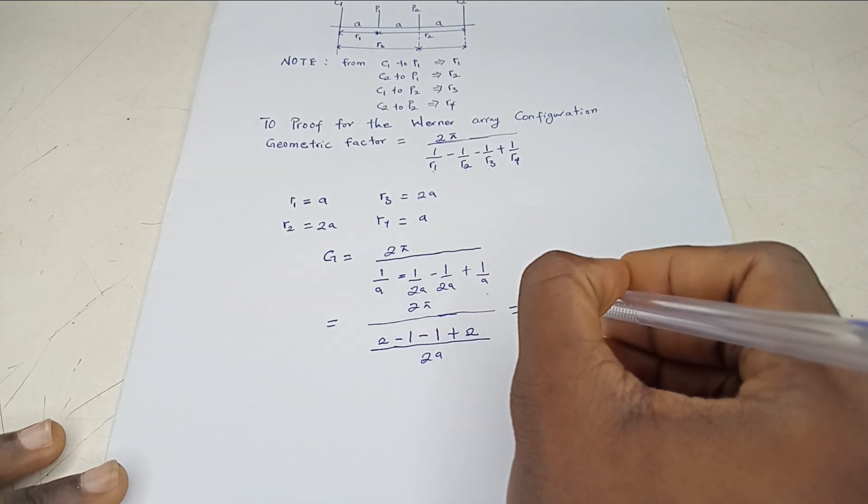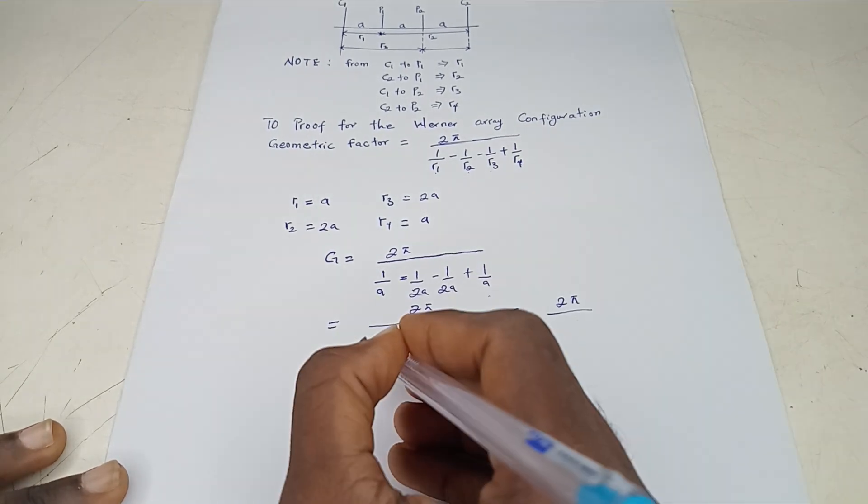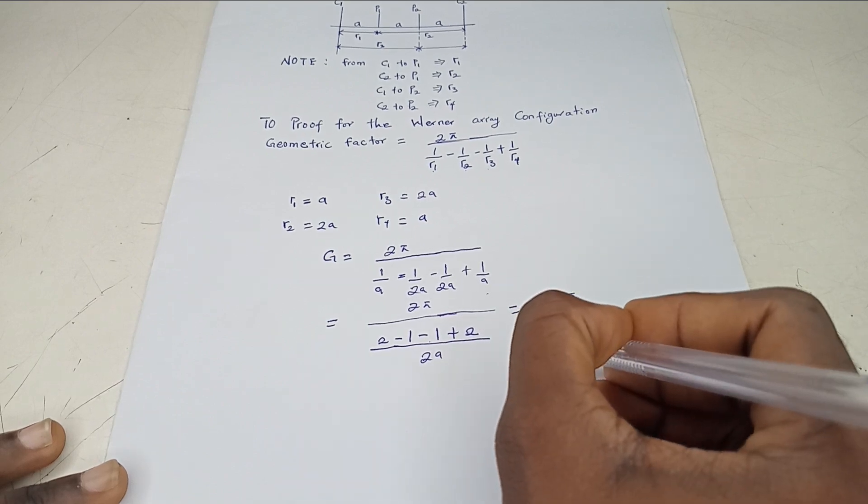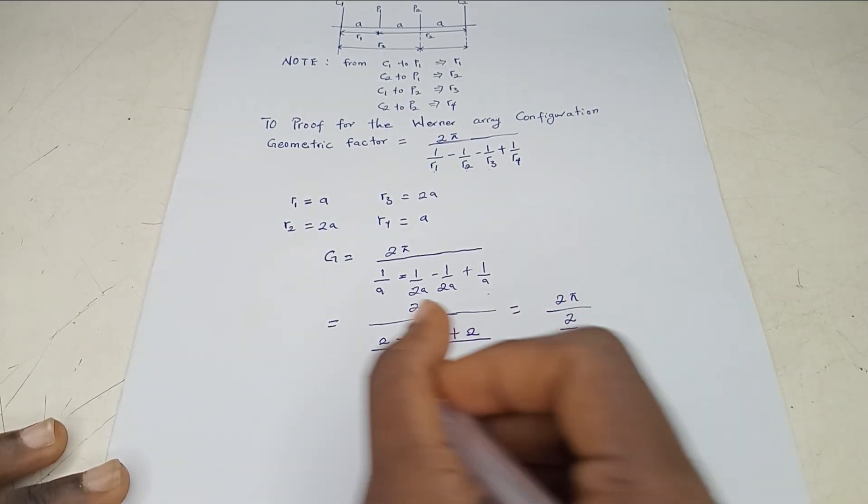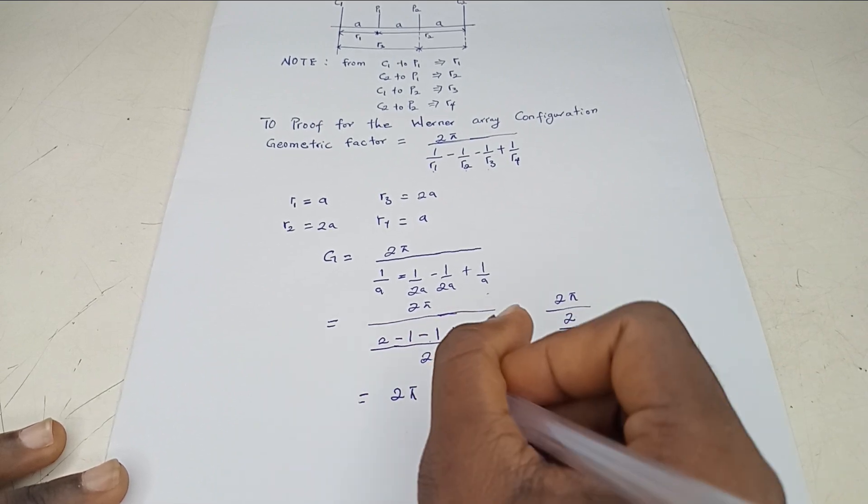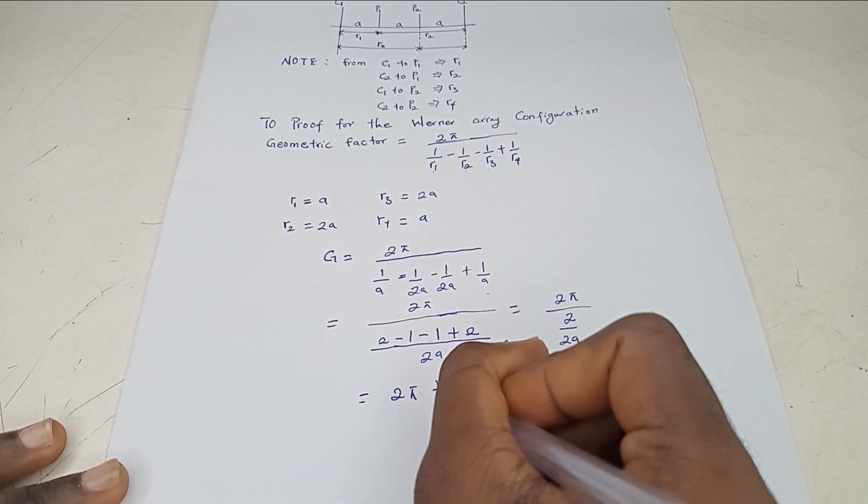So this gives us 2π over 2 minus 1 minus 1. Everything is 2 over 2A. So we can say 2π divided by 2 over 2A.